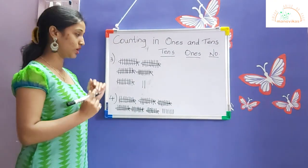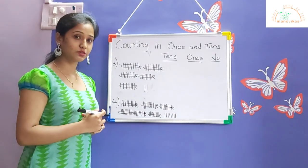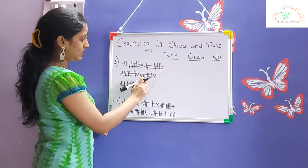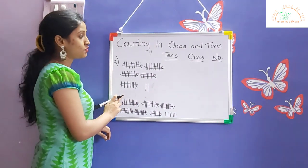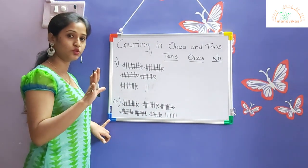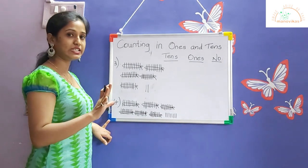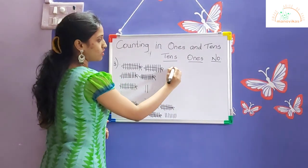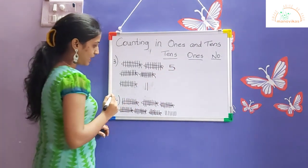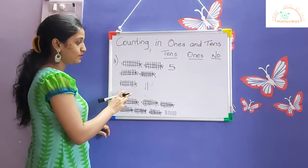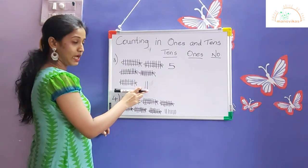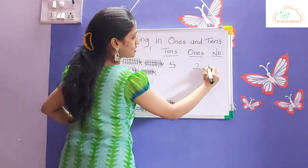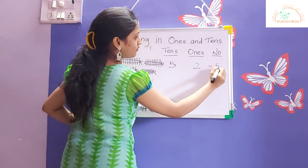Now the third one: how many groups of tens are there? One, two, three, four, five — we have five groups of tens. We write five in the tens column. The remaining are one and two, so two ones go in the ones column. Five tens and two ones is equal to fifty-two.